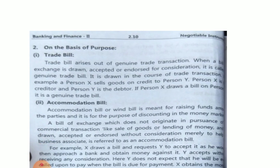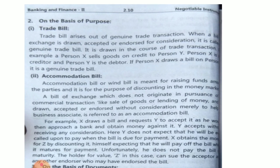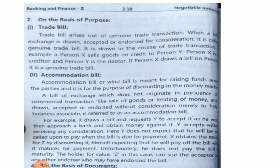On the basis of purpose, the first type is the trade bill. A trade bill arises when there is a genuine trade transaction — when a bill of exchange is drawn, accepted, and endorsed for consideration, it is known as a trade bill. The second type is the accommodation bill, also known as a wind bill. It is meant for raising funds among parties, or for the purpose of discounting in the money market. A bill of exchange which does not originate from a commercial transaction such as sale of goods or lending of money, but helps to raise funds, is known as an accommodation bill.